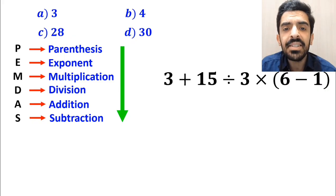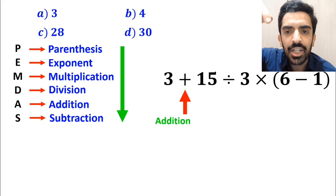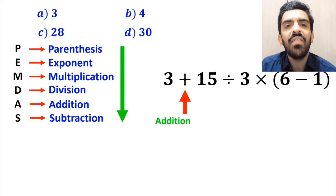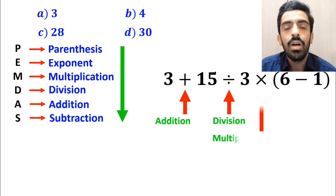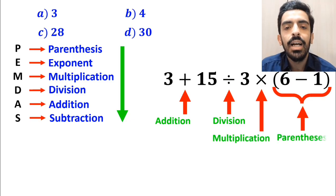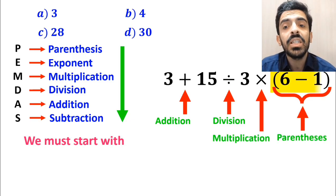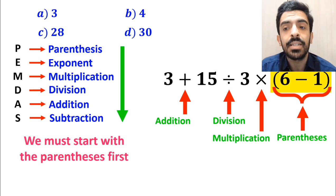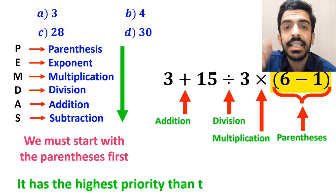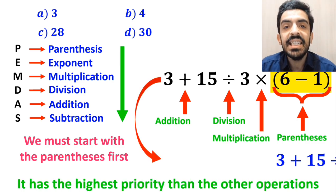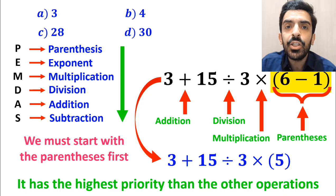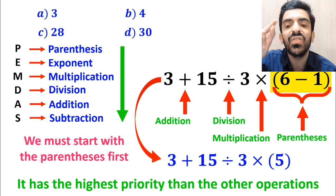As you can see on the screen, in this expression we first have an addition sign, then a division sign, followed by a multiplication, and finally parentheses. We must start with the parentheses first because it has the highest priority. So this expression simplifies to 3 plus 15 divided by 3 times 5.